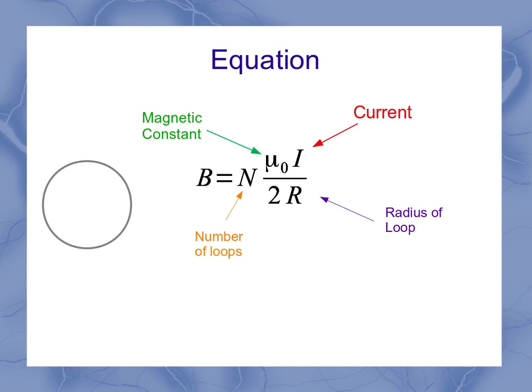So if I've got a loop of wire over here, this equation actually only finds the magnetic field at the center of that loop. It doesn't give me the magnetic field for any other position around that loop.